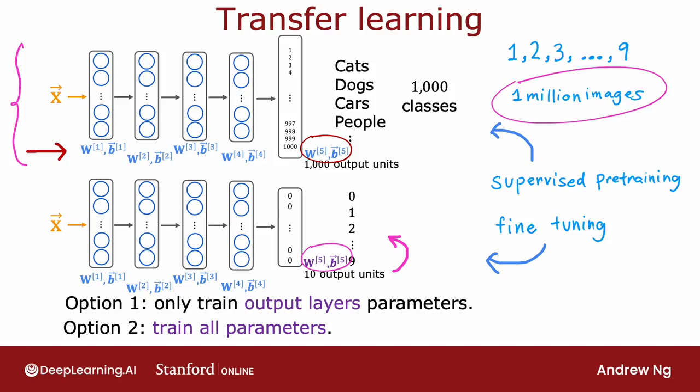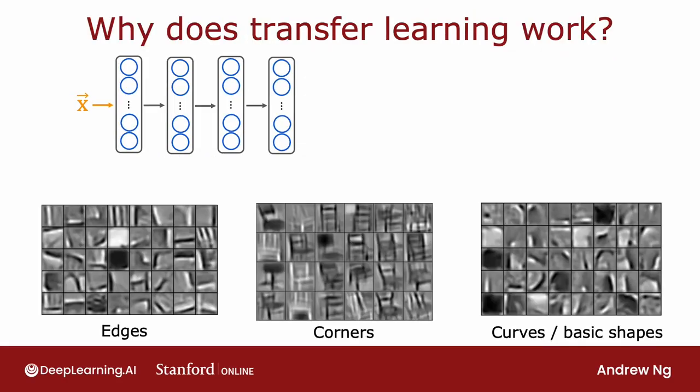But why does transfer learning even work? How could you possibly take parameters obtained by recognizing cats, dogs, cars, and people and use that to help you recognize something as different as handwritten digits?